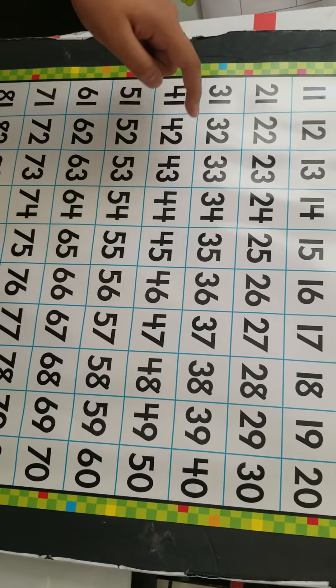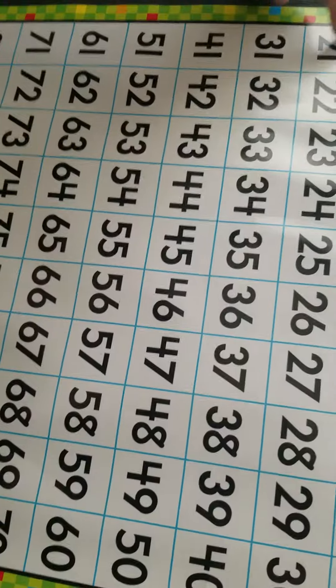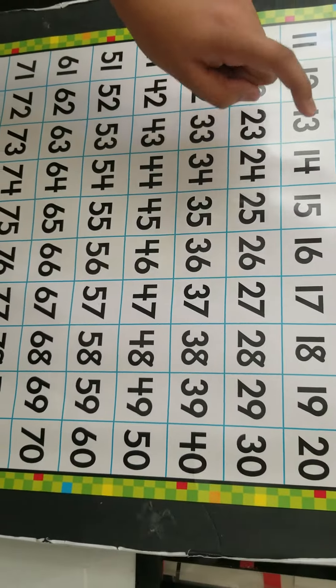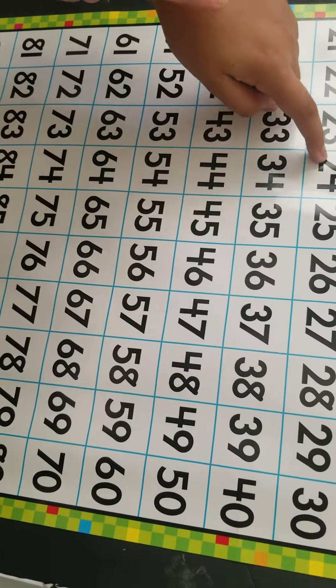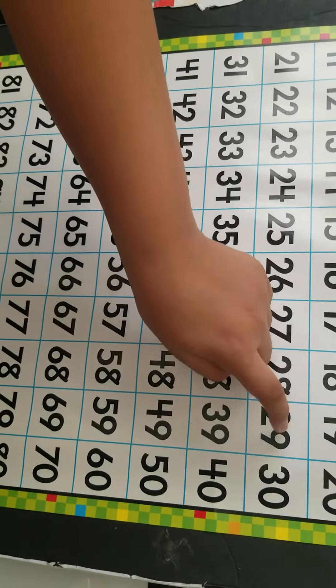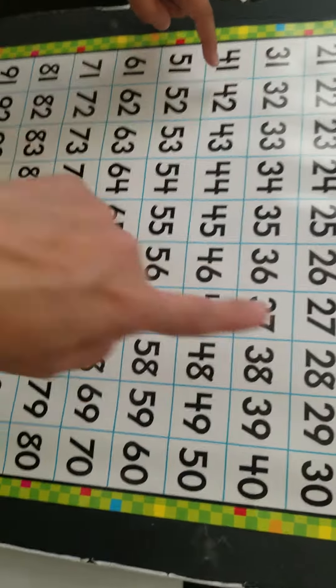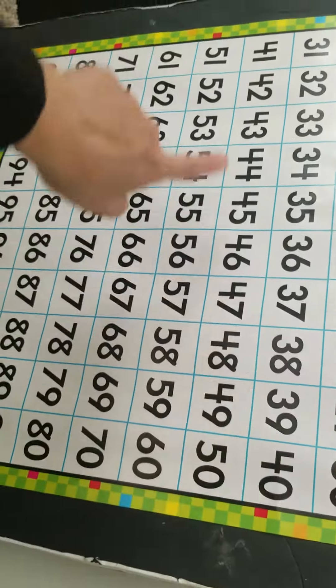21. Where's 21? Over here. 21, 22, 23, 24, 25, 26, 27, 28, 29, 30. Next.